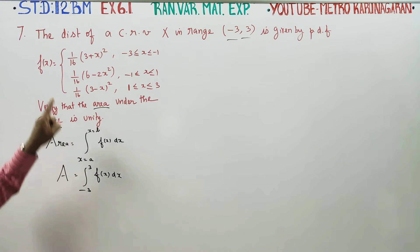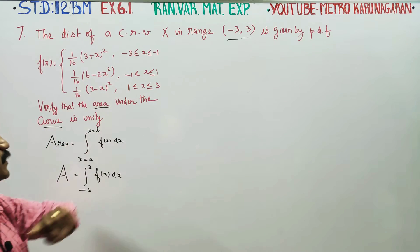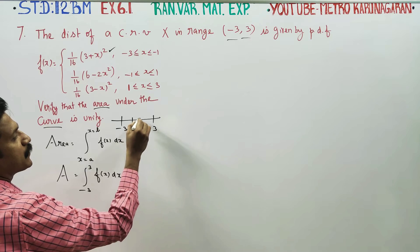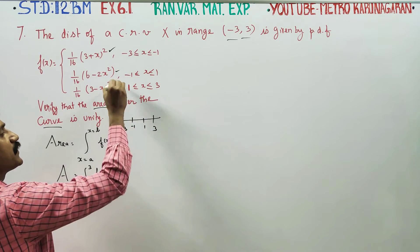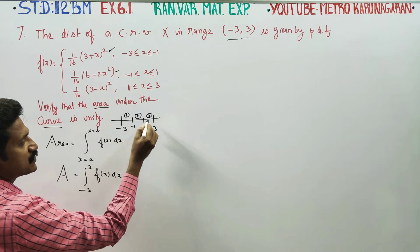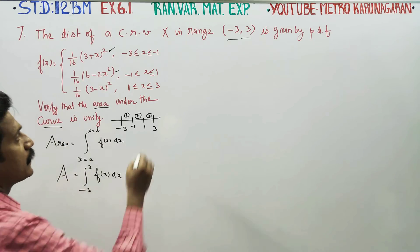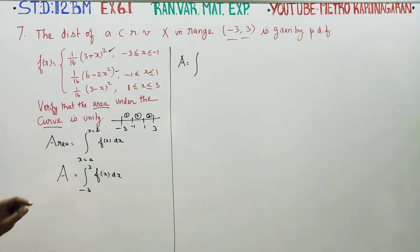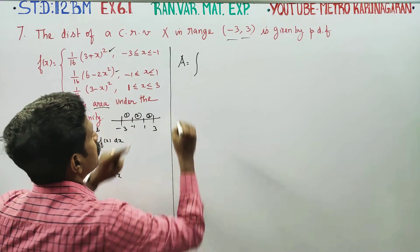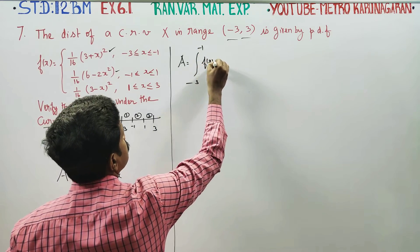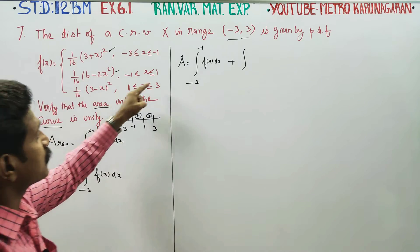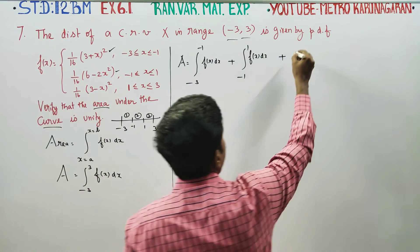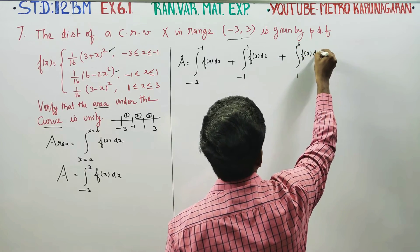Now, f(x) is a piecewise function defined over minus 3 to 3. There is a break at minus 1 and plus 1. So we split the integral into three parts: from minus 3 to minus 1, from minus 1 to 1, and from 1 to 3. The total area A is the sum of these three integrals.